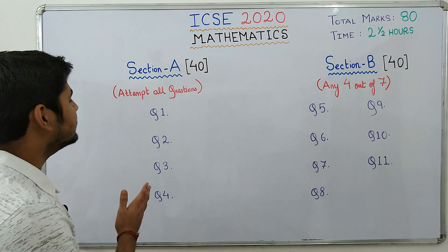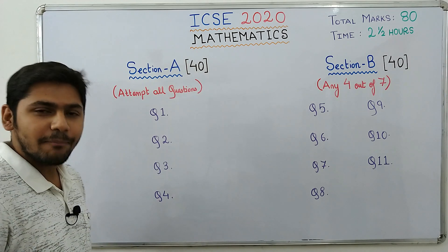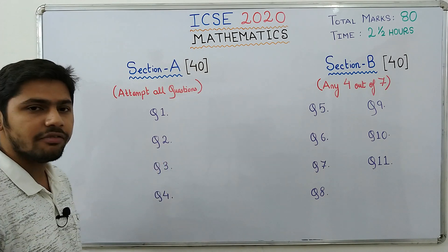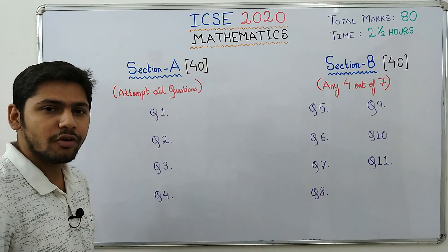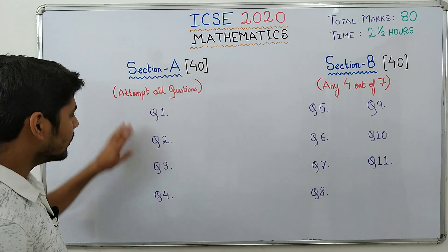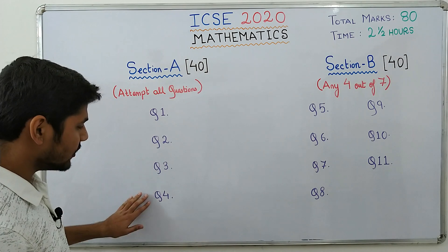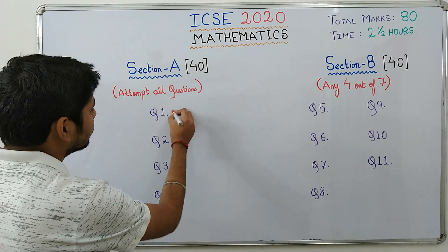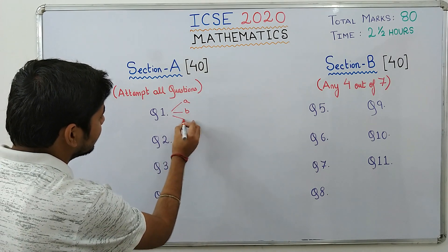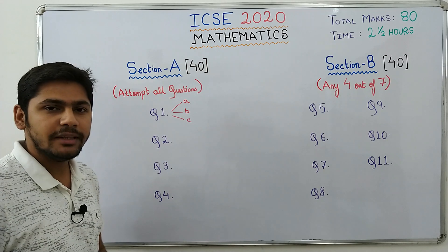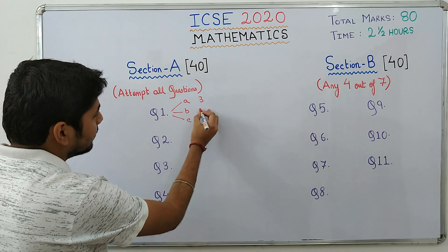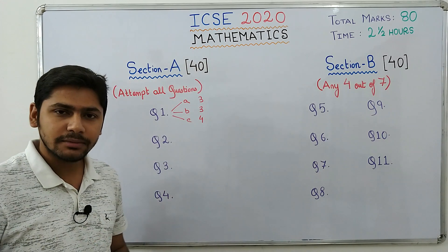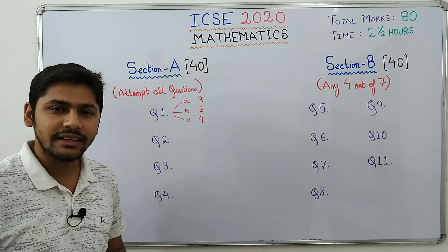Section A is worth 40 marks and is compulsory — you must attempt all questions. You get four questions of 10 marks each, giving 4 × 10 = 40 marks. Each question has three subparts A, B, and C with a mark subdivision of 3 + 3 + 4. In Section A the sums are a little short and the calculations are relatively small.